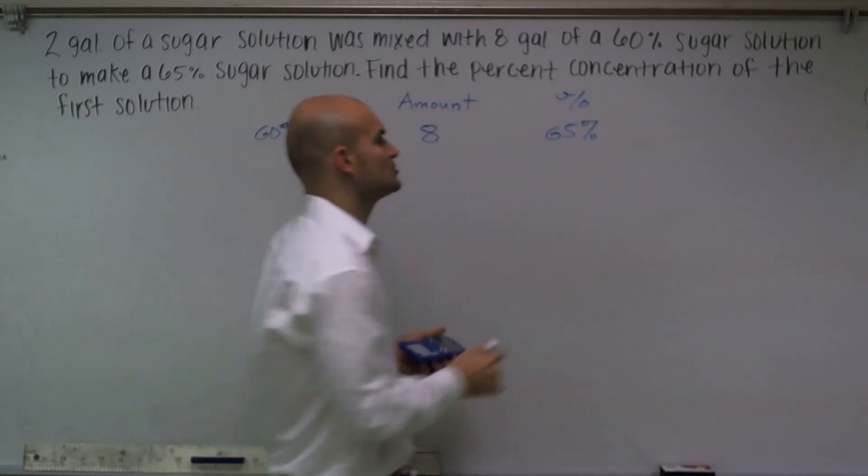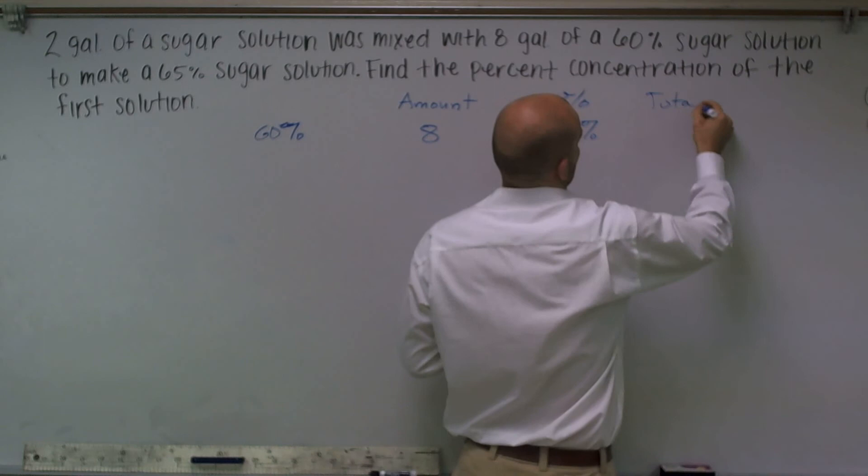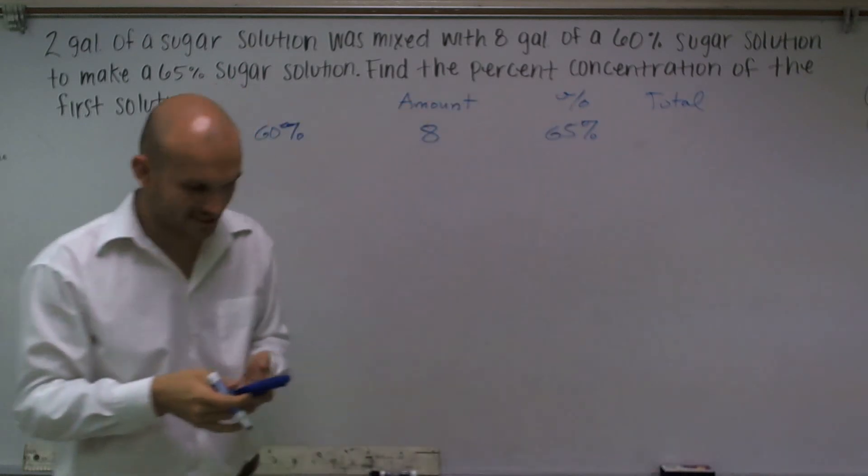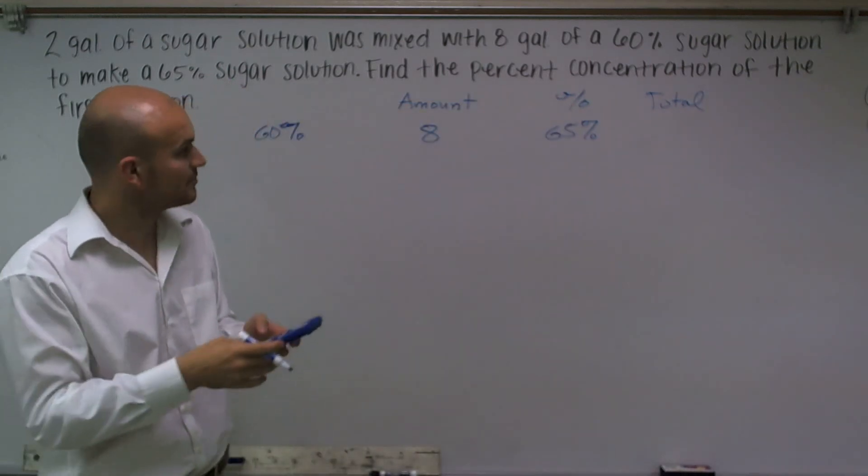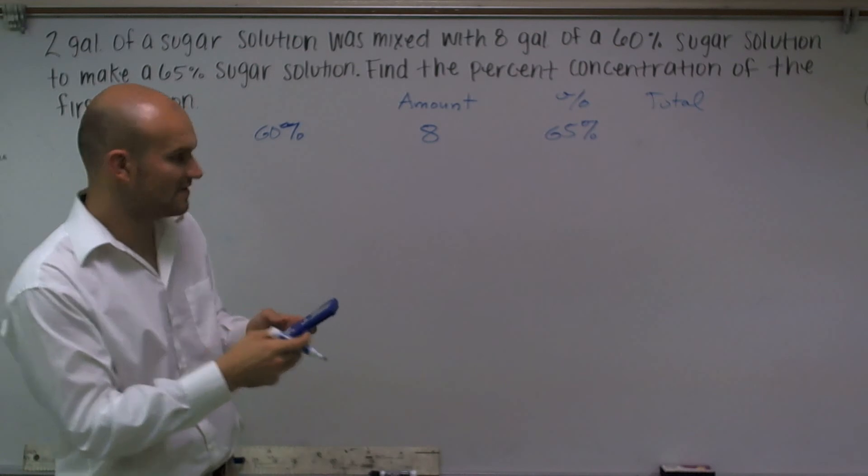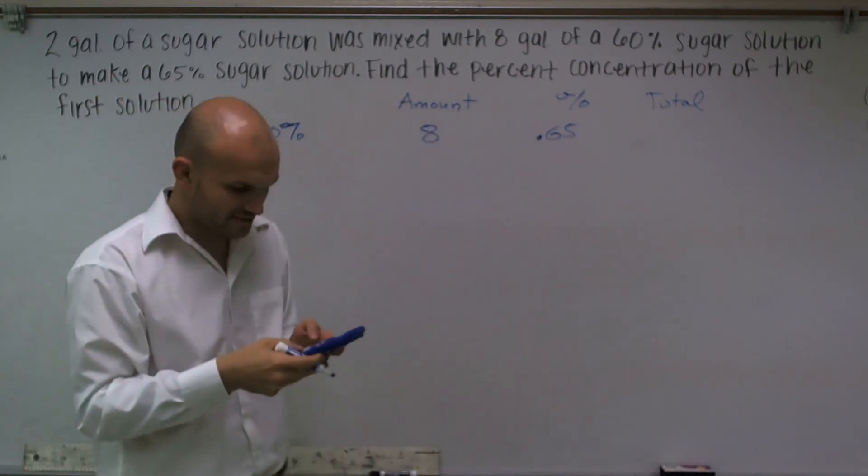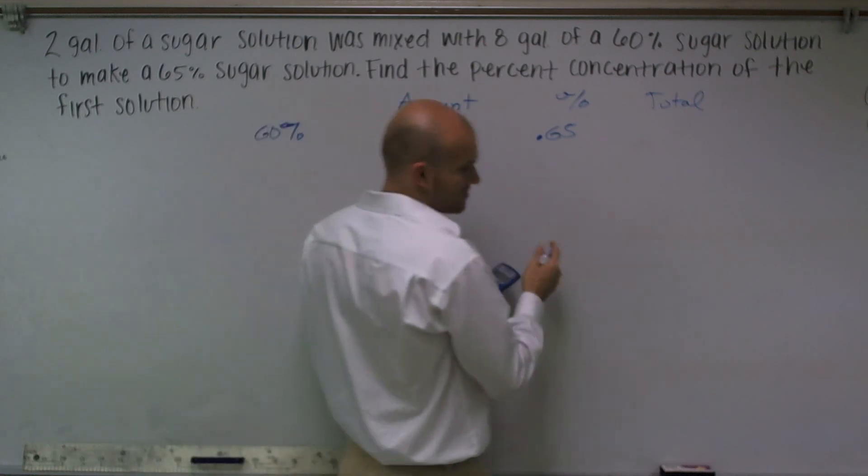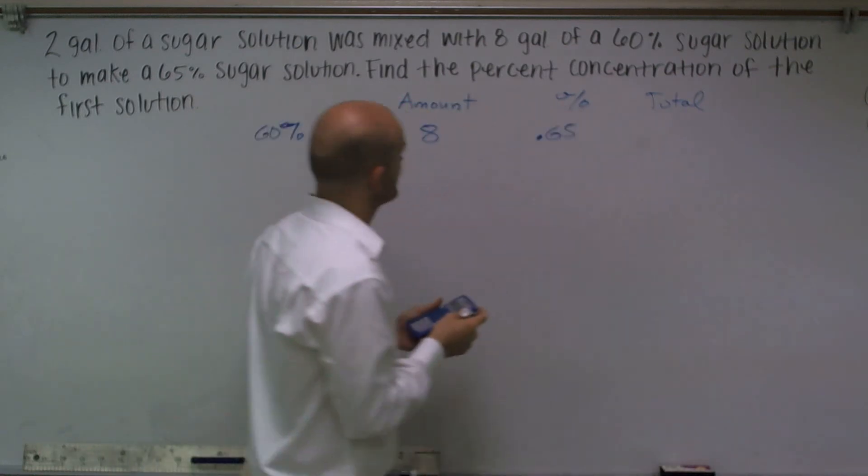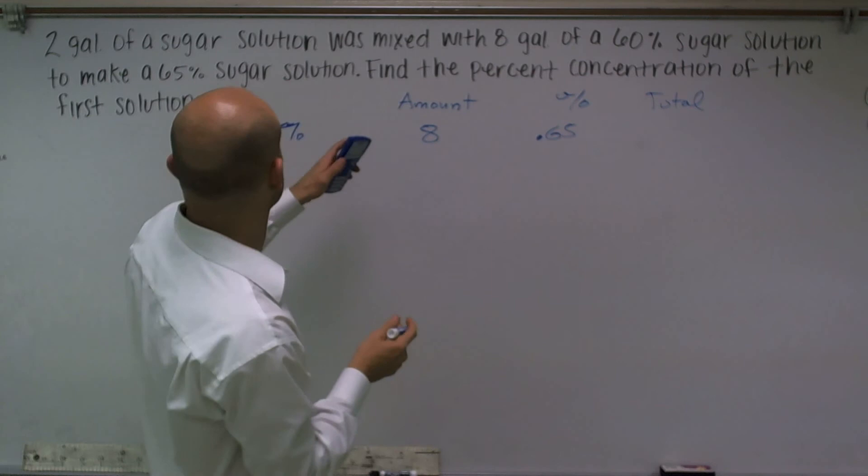Now, if I want to find out what is the total amount of sugar that's in that solution, all I'm simply going to do is .65, which I'll probably just write as .65, .65 times eight. That gives me, I'm sorry...